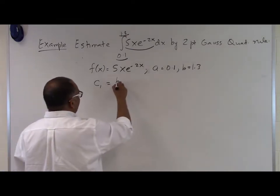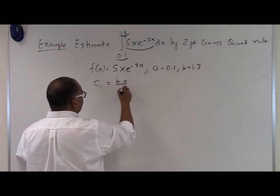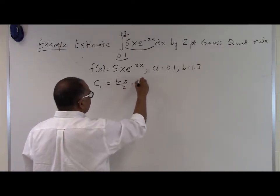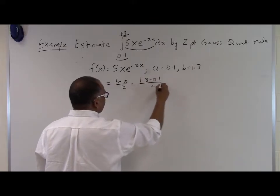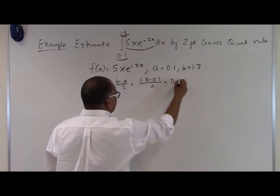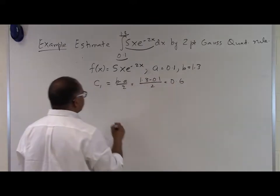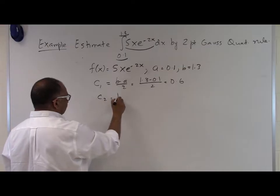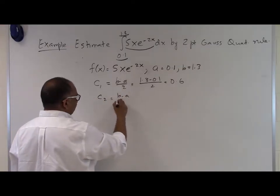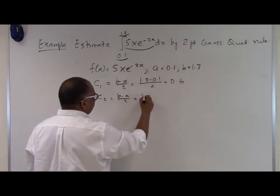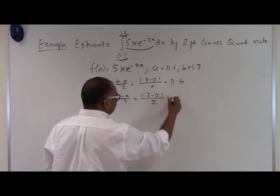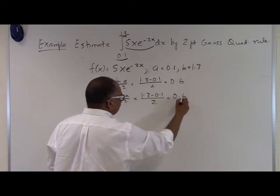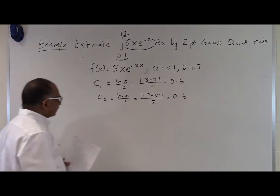c1 is (b minus a) divided by two, which is (1.3 minus 0.1) divided by two, which equals 0.6. c2 is also (b minus a) divided by two — that's (1.3 minus 0.1) divided by two — which is also 0.6.